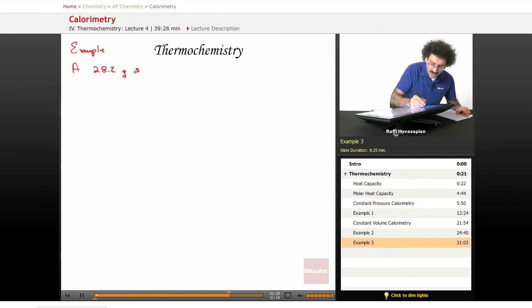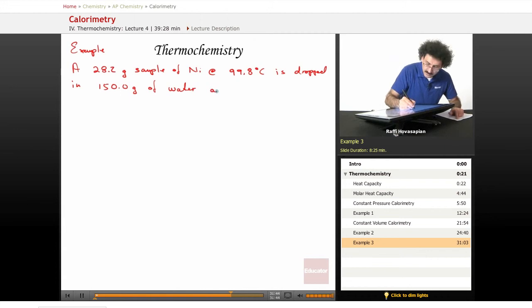A 28.2 gram sample of nickel at 99.8 degrees Celsius is placed in, is dropped in if you will, is dropped in 150.0 grams of water at 23.5 degrees Celsius. So the nickel is at 99.8 degrees Celsius. We drop it in water that's at 23.5 degrees Celsius.